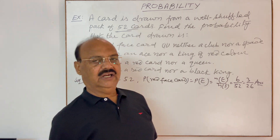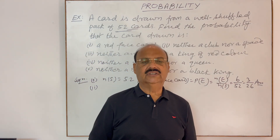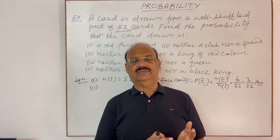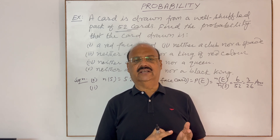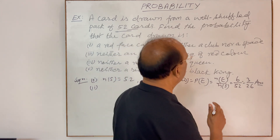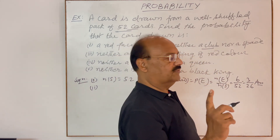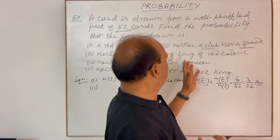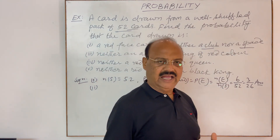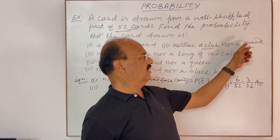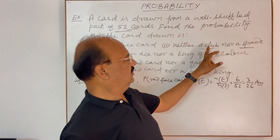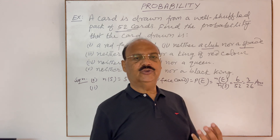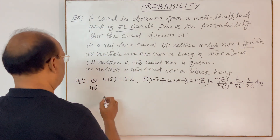Now let us see the second part: neither a club nor a spade. As discussed, there are four suits and each suit consists of 13 cards — 13 cards of club, 13 cards of spade, 13 cards of heart, and 13 cards of diamond. Neither a club nor a spade means we exclude 13 plus 13 equals 26 cards. Out of 52, if 26 cards are excluded, we will have 26 remaining cards.